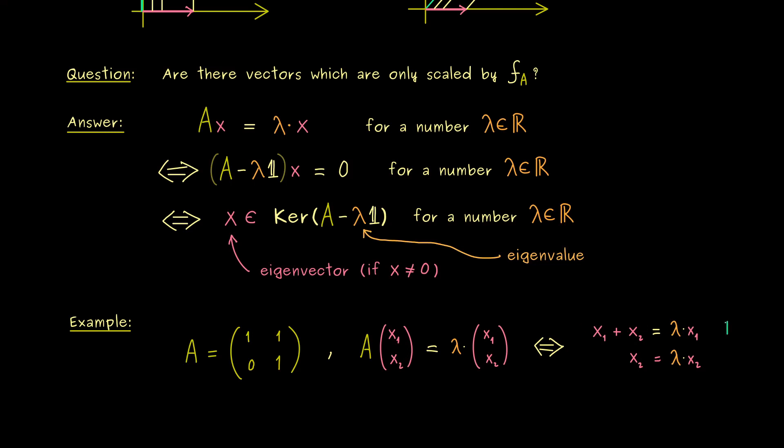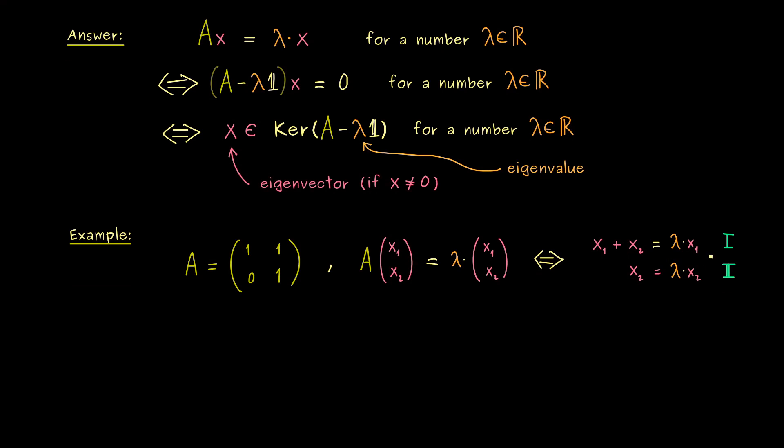The first one is x₁ plus x₂ is equal to λ times x₁. And the second one is simply x₂ is equal to λ times x₂. So we see, we have two equations but three unknowns. We want to find the two components and the scaling factor λ. However, we also recognize this is not a linear system, because we have the product of two unknowns here. Therefore, we have to do a little bit more before we can apply our linear solving algorithms.